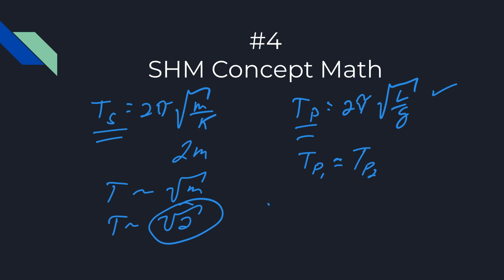If they ask about frequency, remember frequency is one over the period. So for the spring with doubled mass, the frequency becomes 1/√2 of the original. For the pendulum, the frequency remains the same. You should definitely know how to do these conceptual math problems — we did it with energy in the previous question, and here with the period.